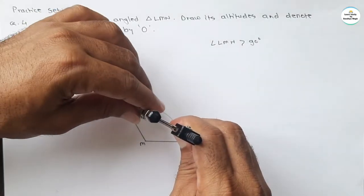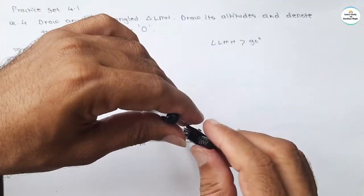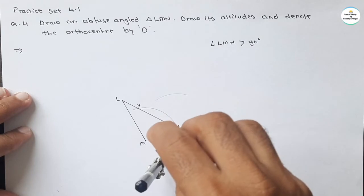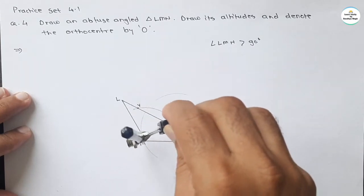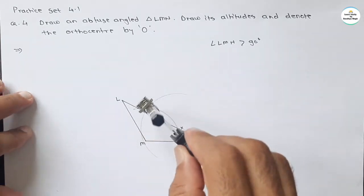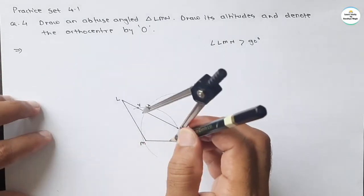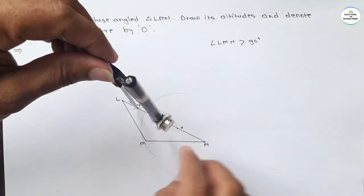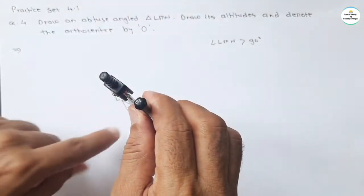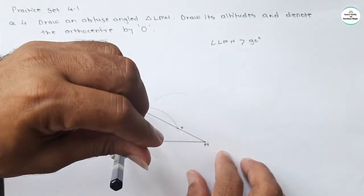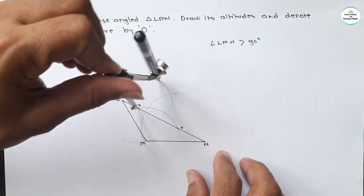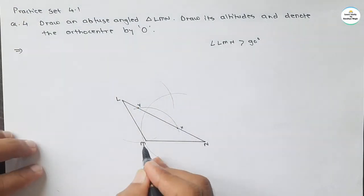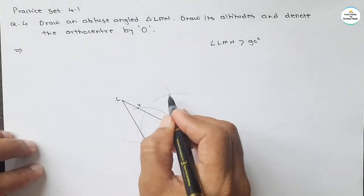Draw arcs on both sides of this line — one arc here, one arc here. Draw a circle by taking center X and another circle by taking center Y. These two circles will intersect each other at two distinct points.